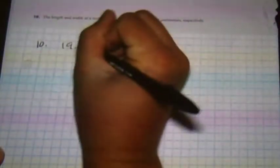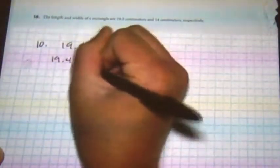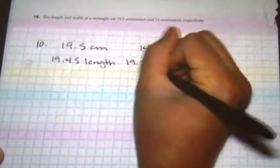So 19.5 cm and 14 cm are our two measurements. To give room for error, we're going to put 19.45 cm for length and 19.55 cm for the other length, so somewhere between these two lengths.